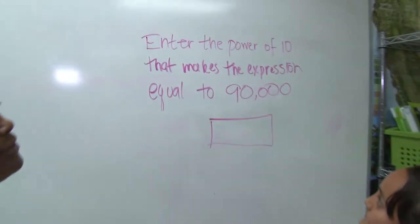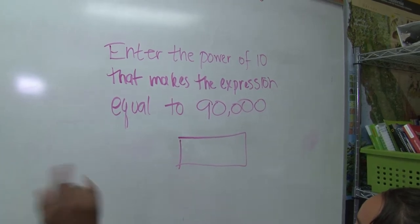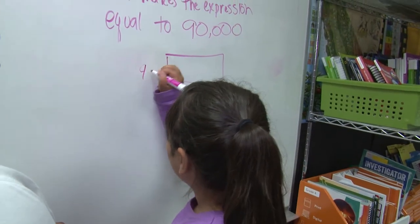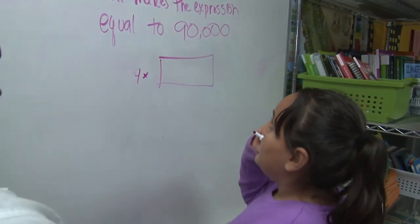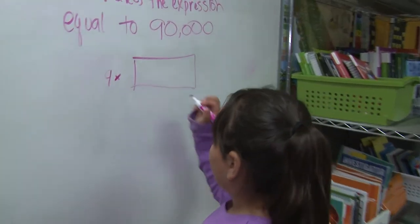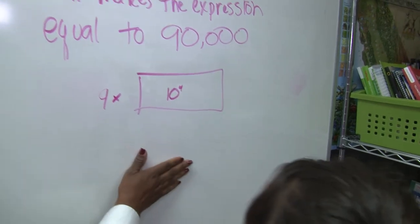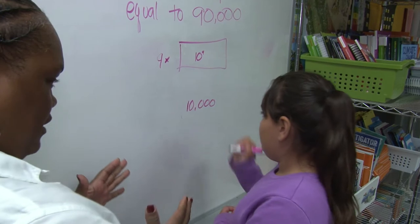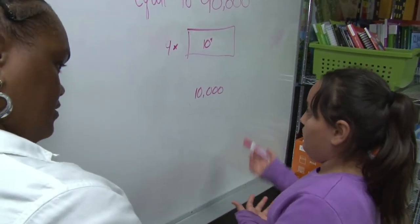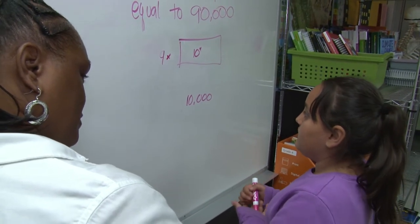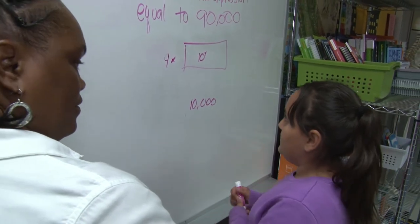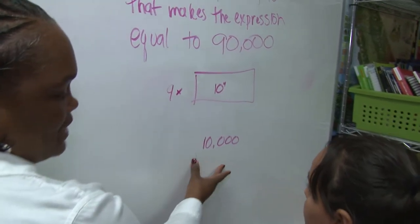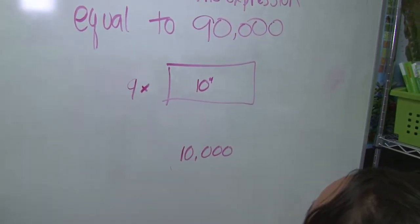In fifth grade you are working on powers, and earlier you told me I love powers. We're going to enter the power of 10 that makes the expression equal to 90,000. So I'm going to multiply 9 times what power of 10? 10 to the power of four. Go ahead and put that in that box. So what number is 10 to the fourth power? 10,000. And where do you get that from? 10 to the power of one is 10 times 1, which is 10. 10 to the power of two is 10 times 10, which is 100. And then so on up to 10 to the power of four, which is 10 times 10 times 10 times 10, which is 10,000. So if you take 9 times 10,000 or 9 times 10 to the power of four, you get 90,000. Very nice.